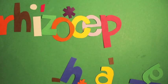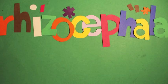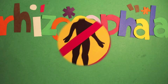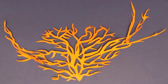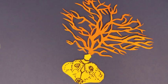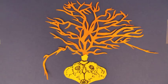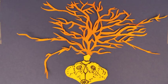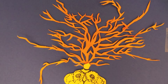Rhizocephala are curious organisms. In their adult form, they have no body other than a system of root-like threads and a sack of reproductive organs. And like many other parasites, rhizocephala can manipulate their hosts to achieve their own objectives.